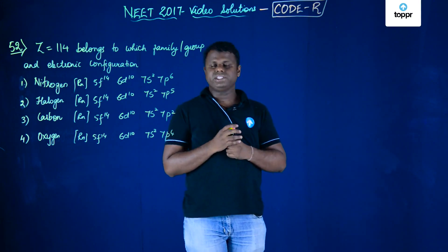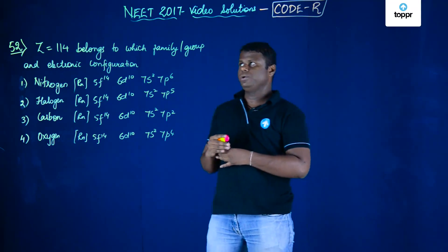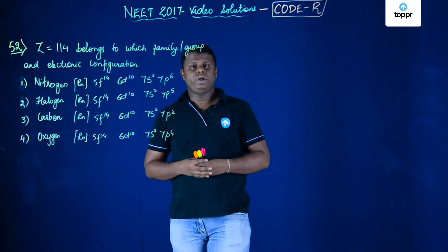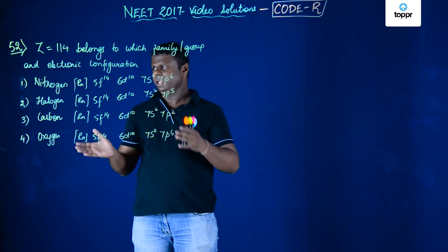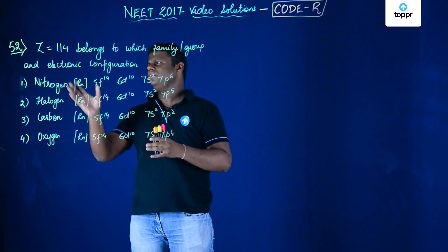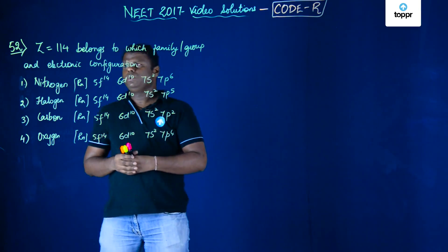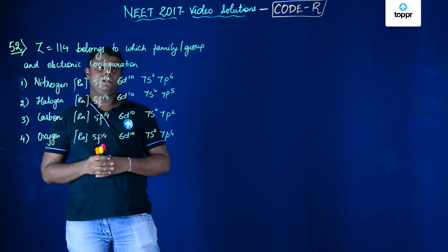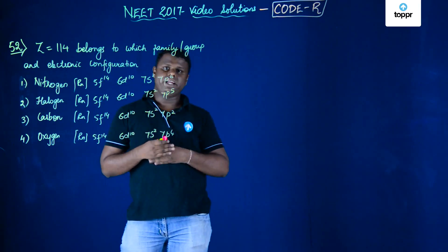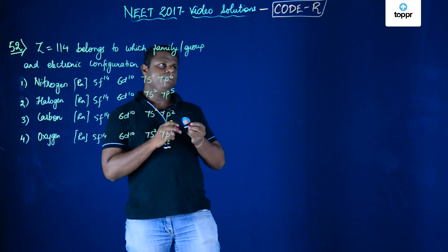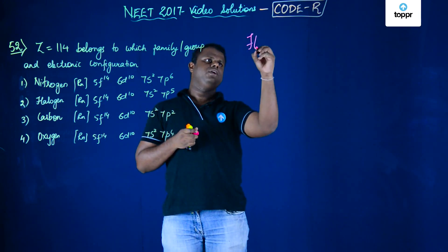Now, let's move on to the next question, which is question number 52, OFNI 2017 code R. So now let's begin analyzing the question: Z equal to 114 belongs to which family? This is a newly discovered element and the name of this element is Flerovium.